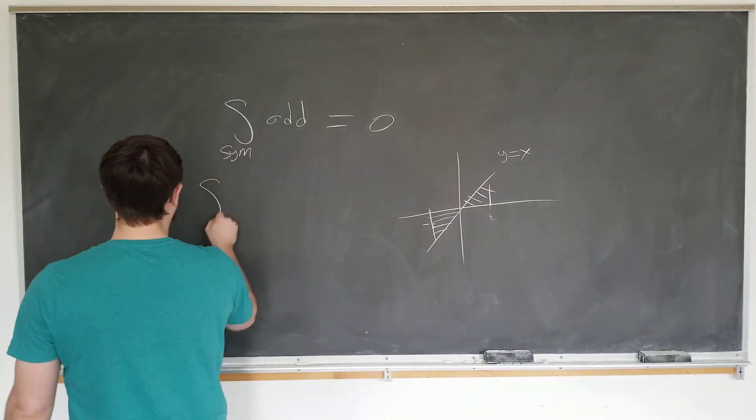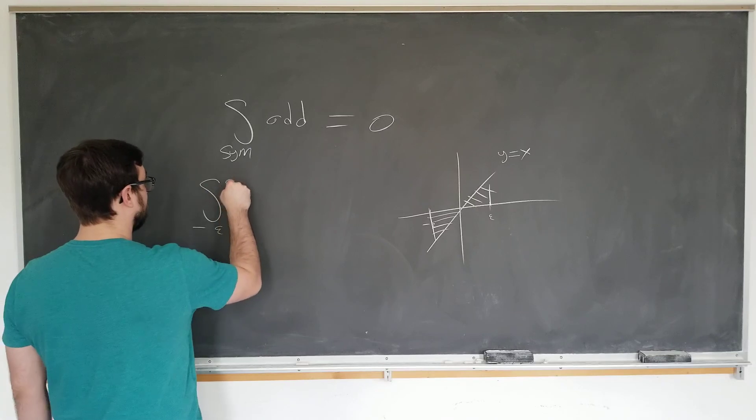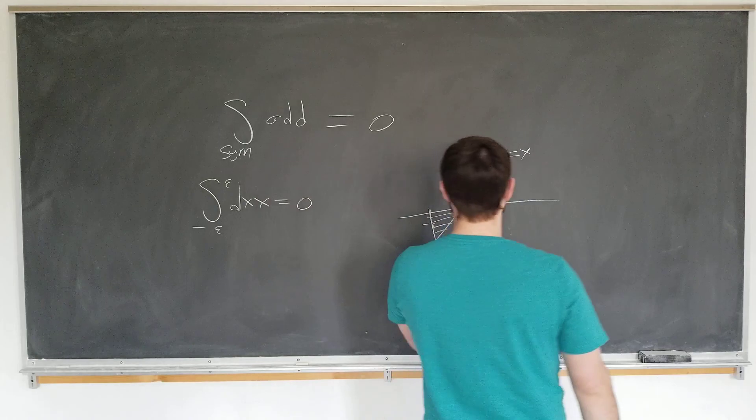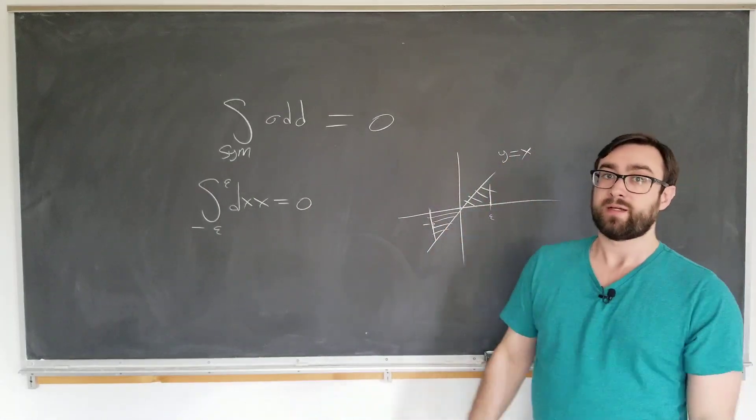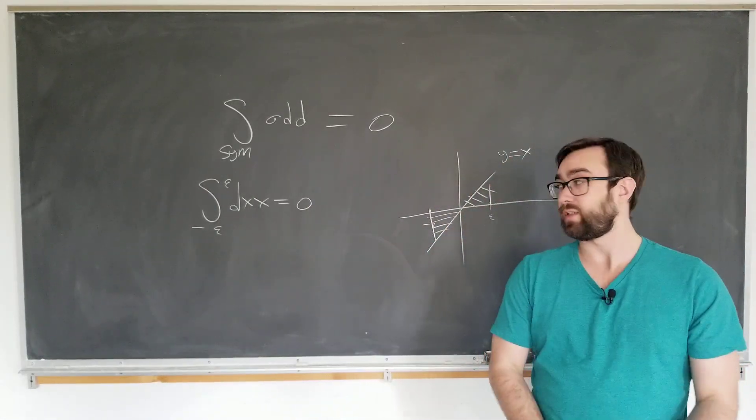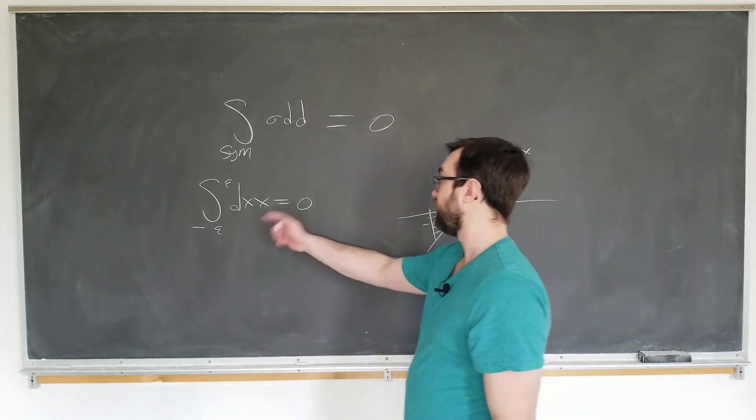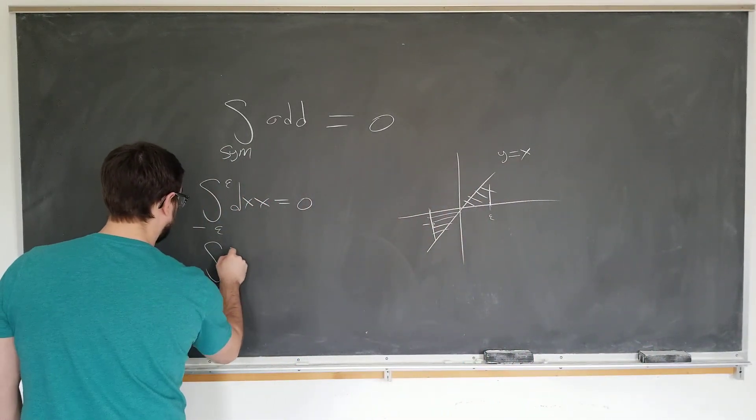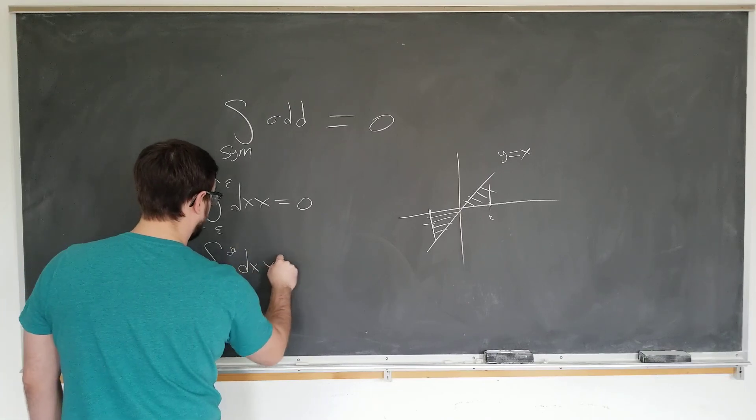The theorem will tell you that, you know, minus a to a, integral dx of x is equal to zero, of course. Technically this only holds for finite a, but in applications in physics you will oftentimes use it for infinite a as well, minus infinity to infinity with respect to x of x equal to zero.